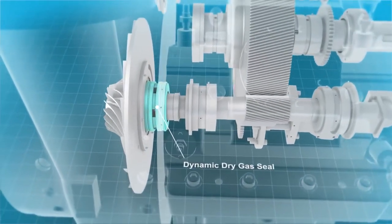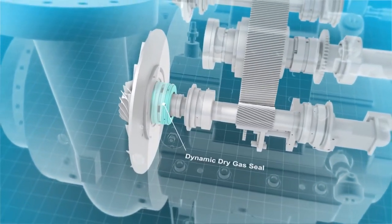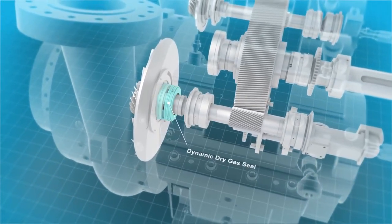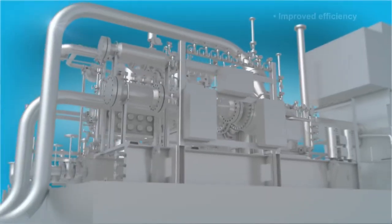In fact, Atlas Copco was the first compressor manufacturer to implement dry gas seals on integrally geared compressors.